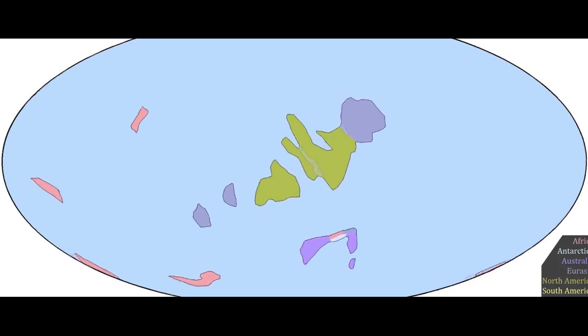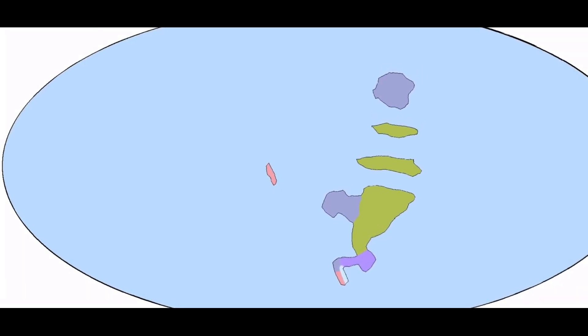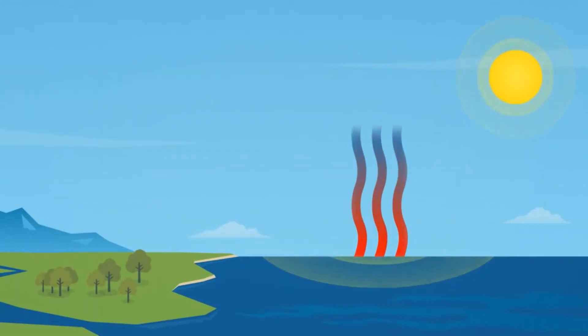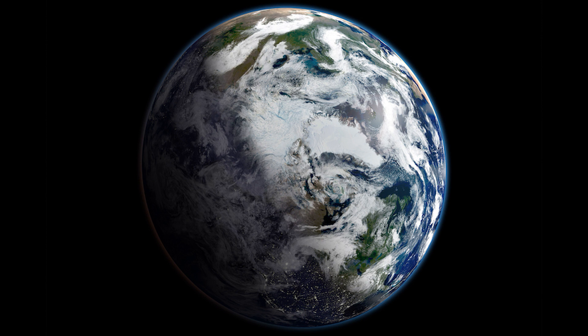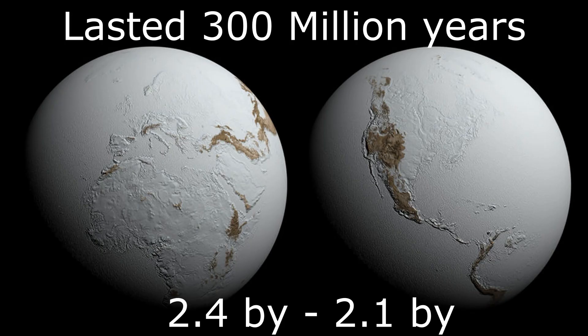Also during that time, the supercontinent of Kenorland started to break up. When supercontinents like these break up, it causes global climate change. When Kenorland split up, it merged with other pieces of land, creating another supercontinent called Columbia. The splitting of Kenorland and merging with other parts of land caused a lot of rifts, which also heated up the seabed. As a result, the seawater evaporated quickly and caused global rainfall, which further cooled the planet down.